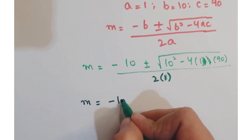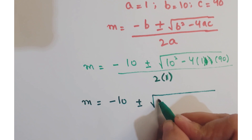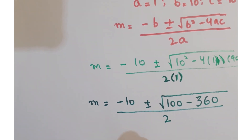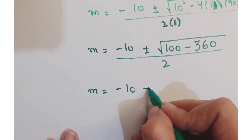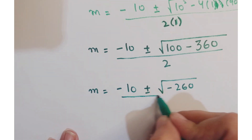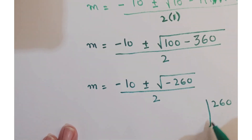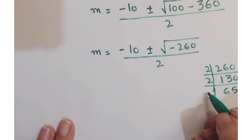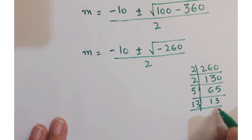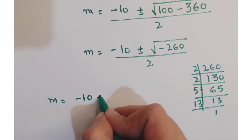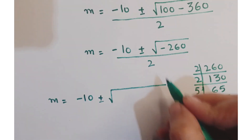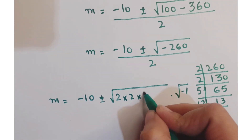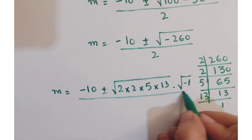Writing the quadratic formula, we have m = (−10 ± √(10² − 4·1·90)) / (2·1). Further, m = (−10 ± √(100 − 360)) / 2, or m = (−10 ± √(−260)) / 2. Now, 260 can be factorized as 2 × 2 × 5 × 13, and we can write m = (−10 ± √(−1) · √260) / 2.